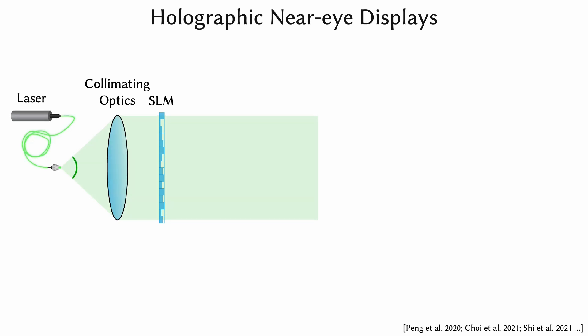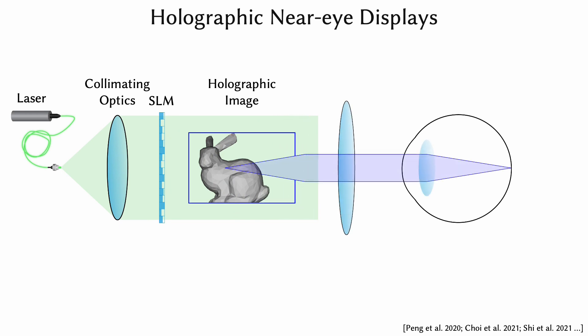In these displays, coherent laser illumination propagates to a spatial light modulator, which delays the phase of the wavefront of light as dictated by an inputted phase pattern. The resulting interference creates an image that is seen by the user through an eyepiece.